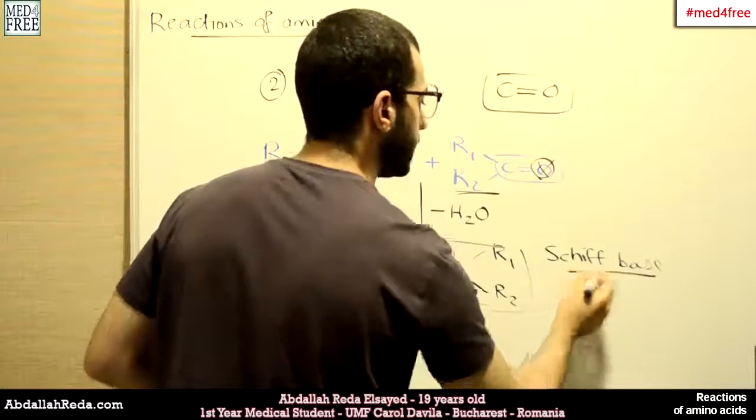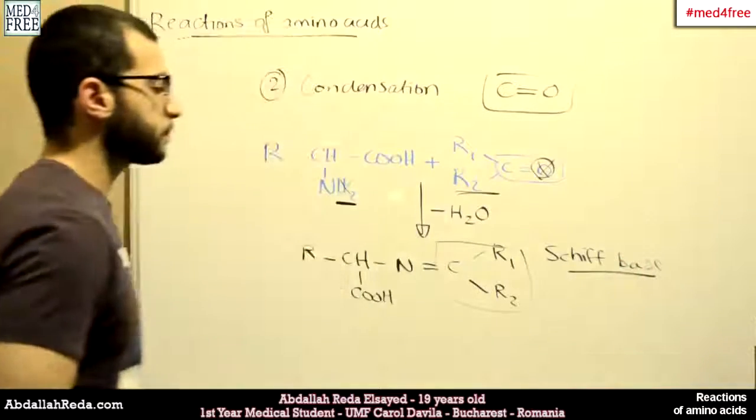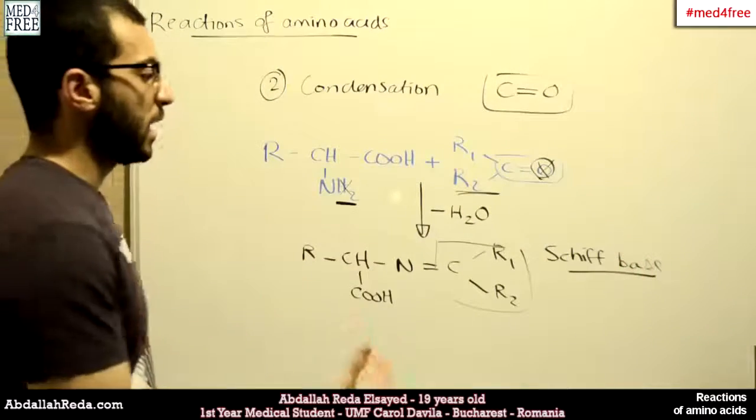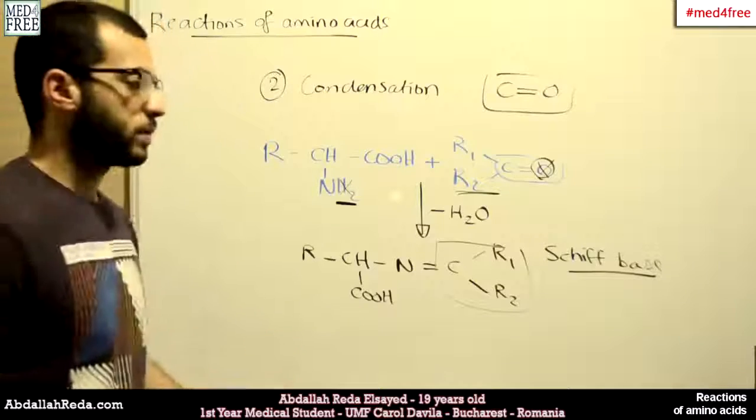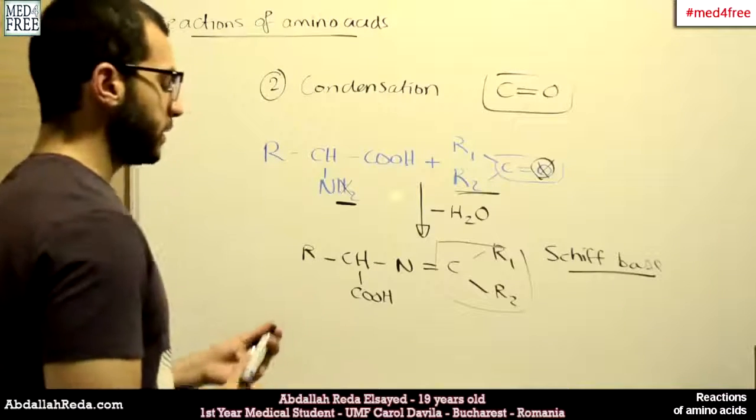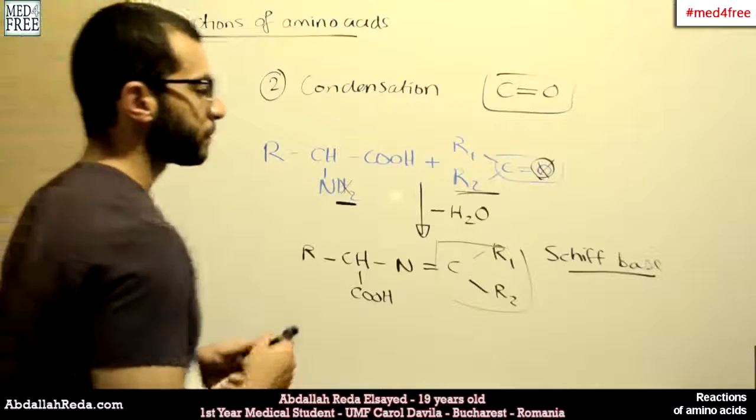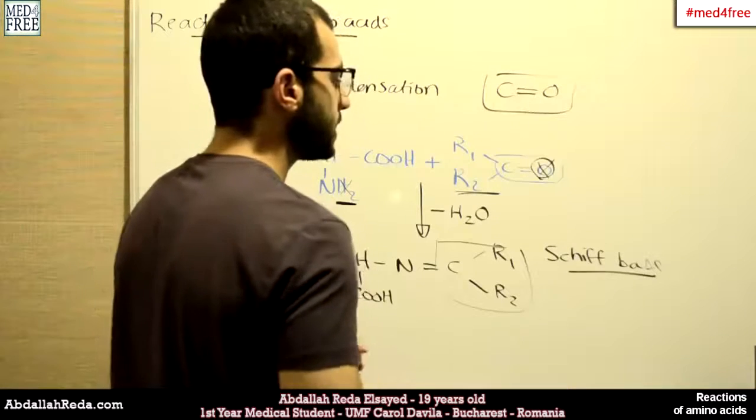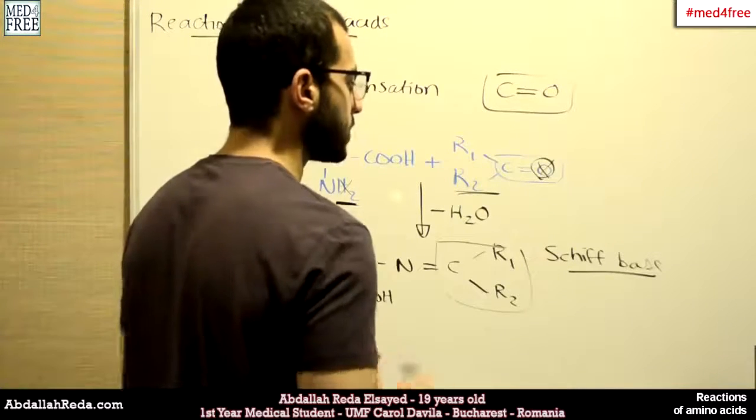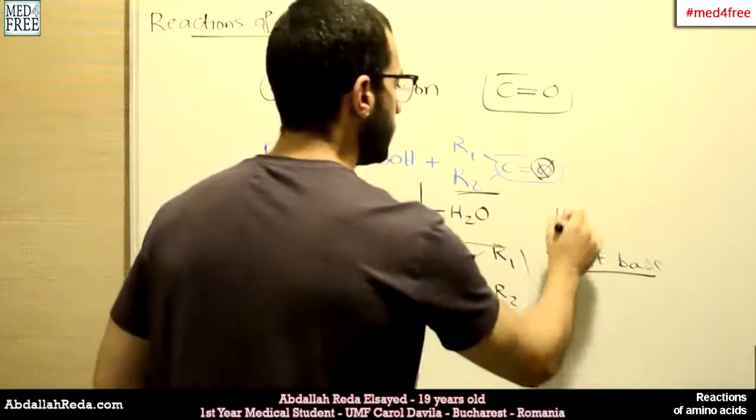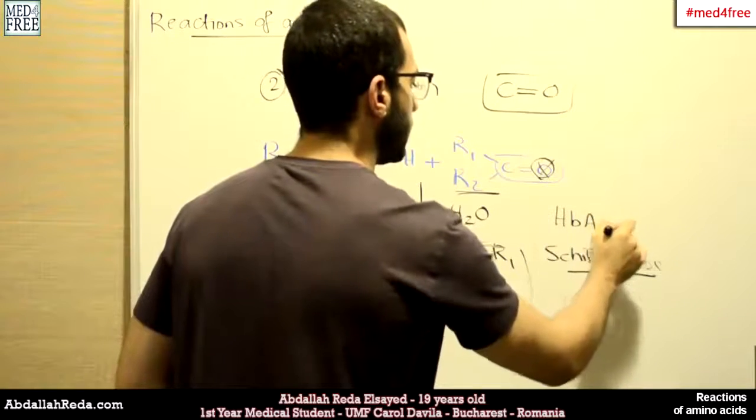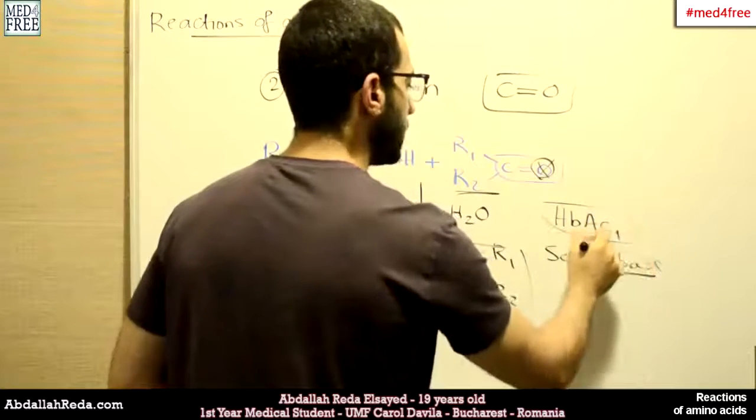This is clinically significant because, for example, hemoglobin binds glucose. And when hemoglobin binds glucose, it forms a compound which has this name. It's glycosylated hemoglobin, HbA1c. This is a Schiff base.